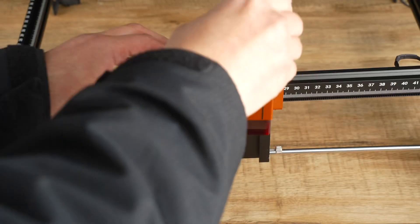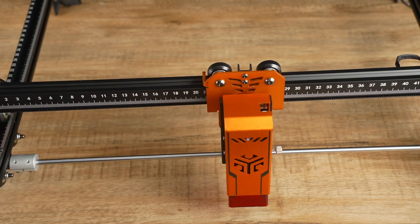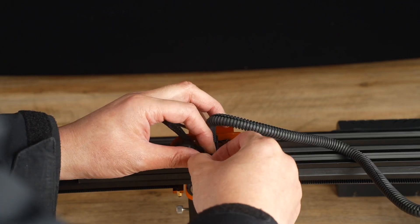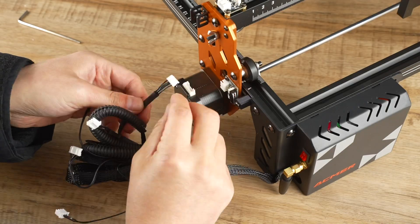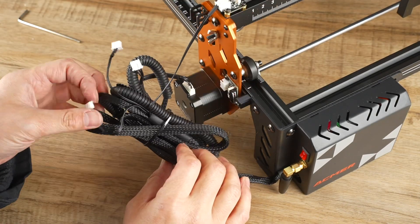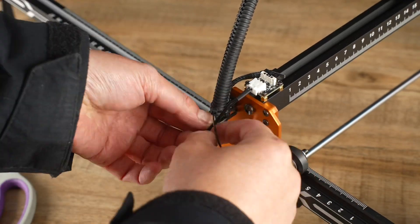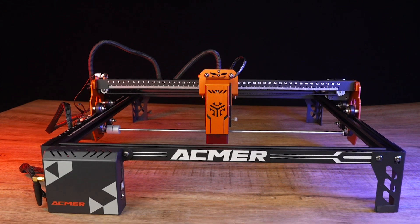Following the completion of the main frame and belt, I proceeded to install the laser module onto the machine. Subsequently, I carefully connected the cables for both the laser module and motor, ensuring proper functionality. Despite the assembly taking more than 1.5 hours, the good news is that no further calibration was required. Let's delve into the machine for a closer look.